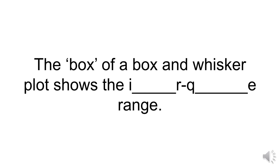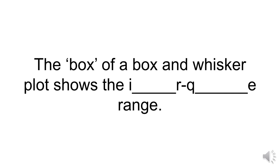Now here goes a little bit of statistics. The box of a box and whisker plot shows the I-blank R, Q-blank E range. So, what is this range called? I'll give you a moment to think. And if you don't know it, you just won't know it. So, I'll give you a quick rundown.